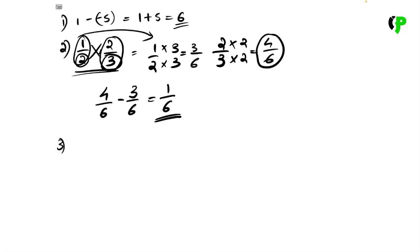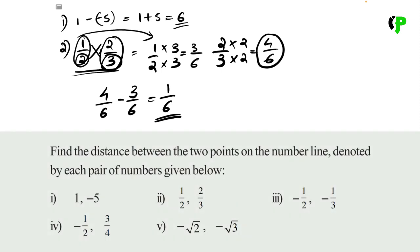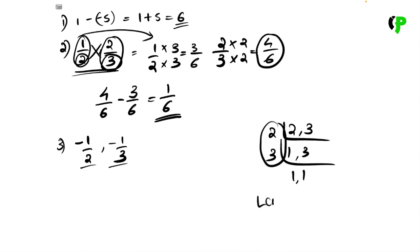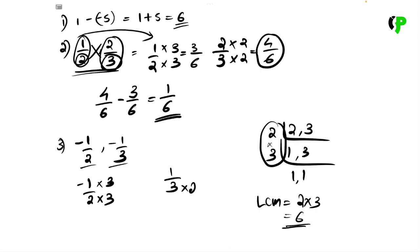Question number 3: negative 1 by 2 and negative 1 by 3. We have denominators 2 and 3. The LCM equals 2 into 3, which is 6. So negative 1 by 2 becomes negative 3 by 6, and negative 1 by 3 becomes negative 2 by 6. Here is negative 3 by 6 and negative 2 by 6.